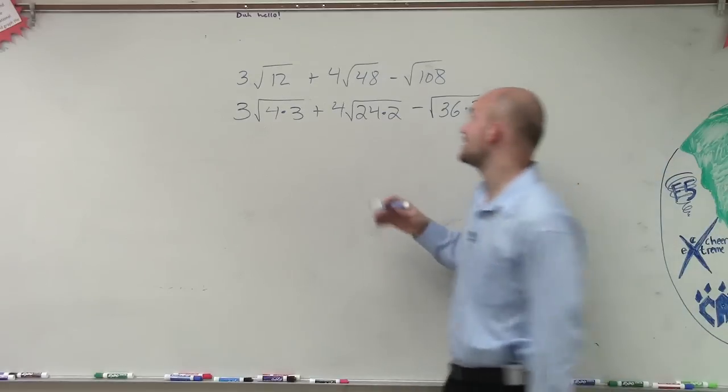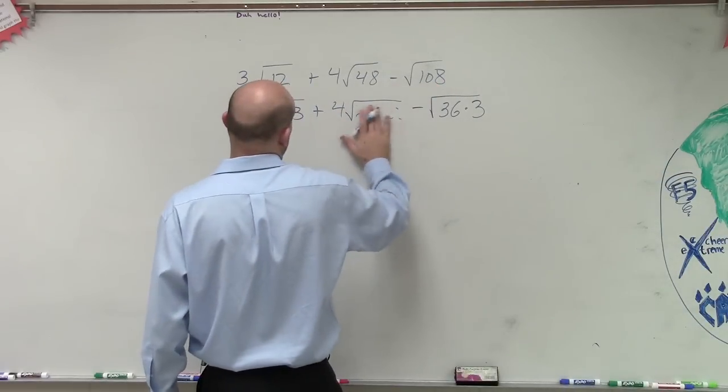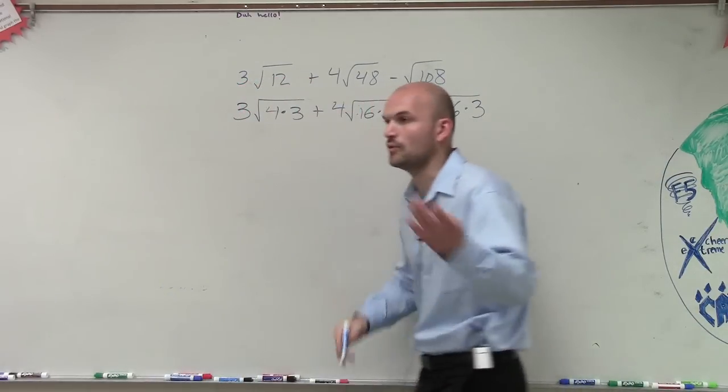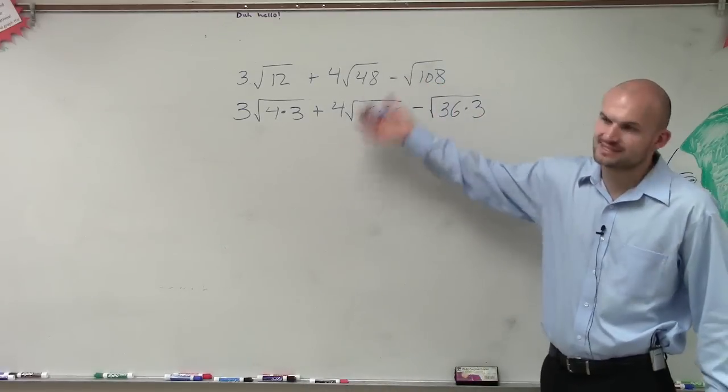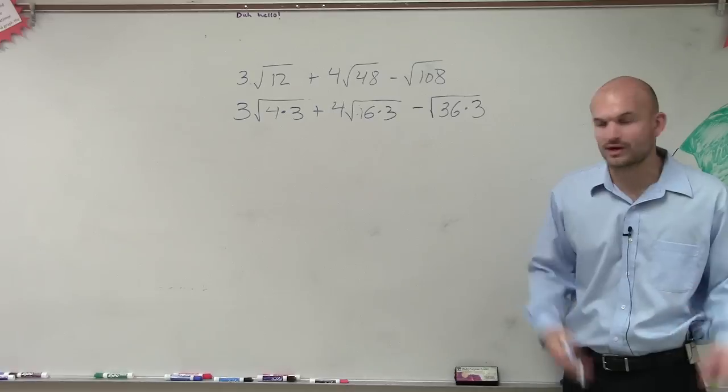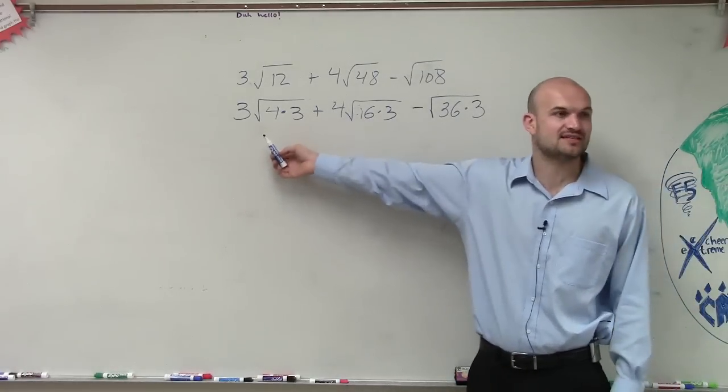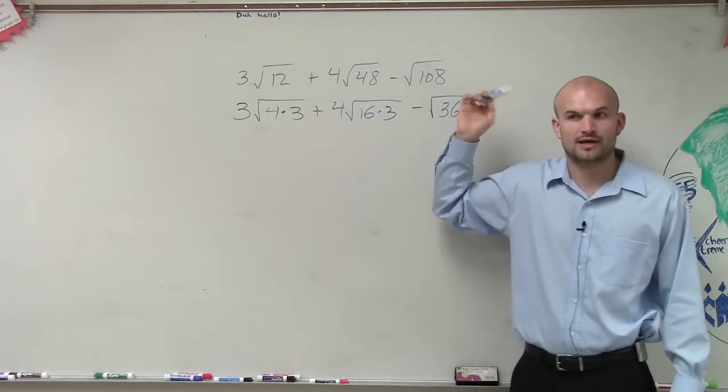16 times 3. You could do 16 times 3, and that's what I would prefer to do, because if you do 16 times 3, you only need to do it once. But 24, you need to simplify again. So it's just doing more work on your own. So do you guys understand how all three of these have a square number that divides into their number?